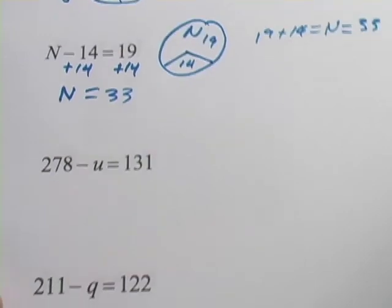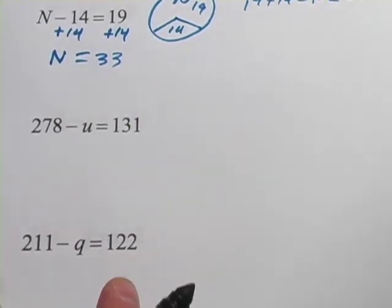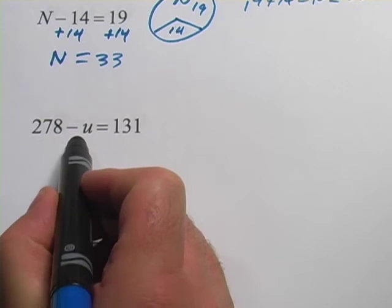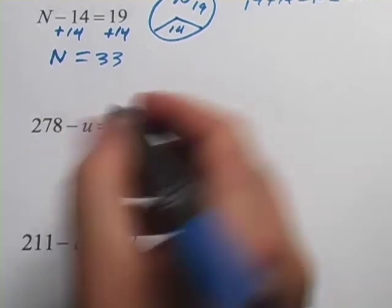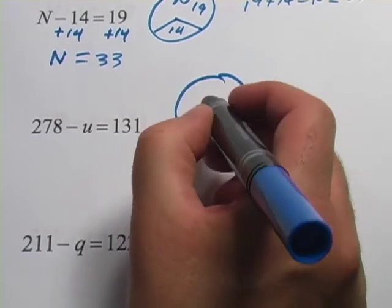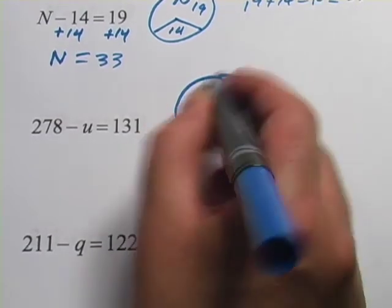All right, this next one is even trickier. This one says 278 minus u equals 131. So let's think about this carefully. We're starting, the whole pie is 278. That's the whole thing.